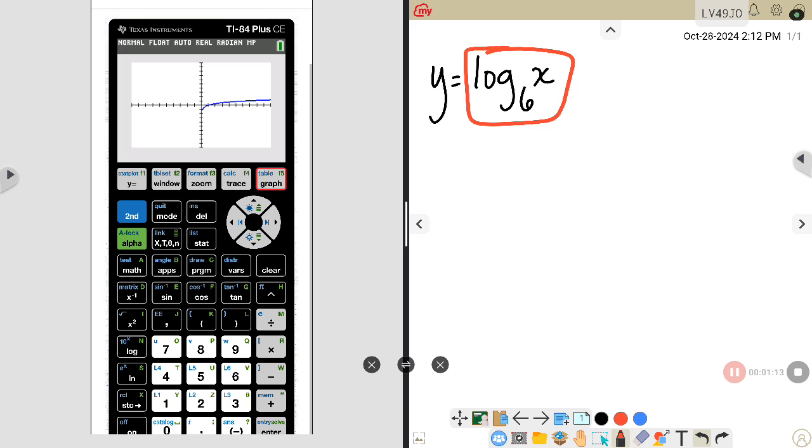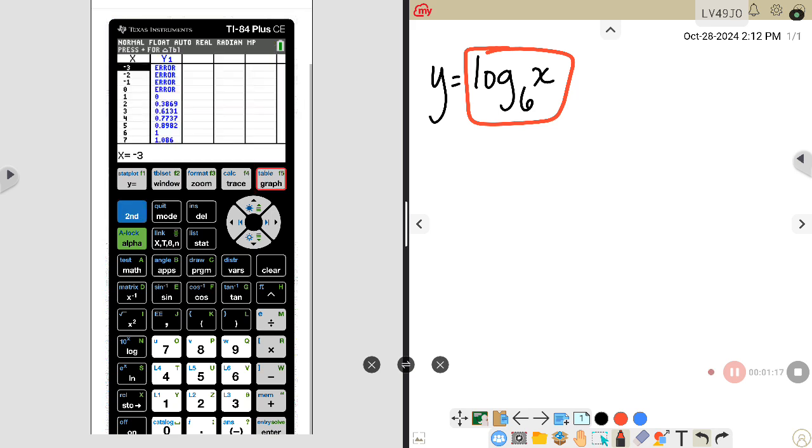Let's look at this table and plot some points. So we will start at one zero, then we have two and zero point, we'll call that zero point four. Let's go down to another good one, six one. Let's look at what this looks like on a graph.